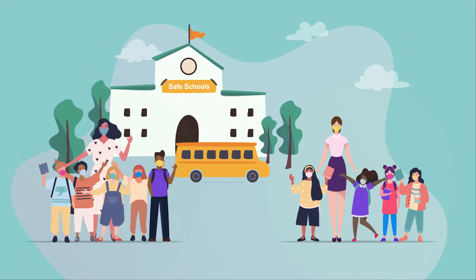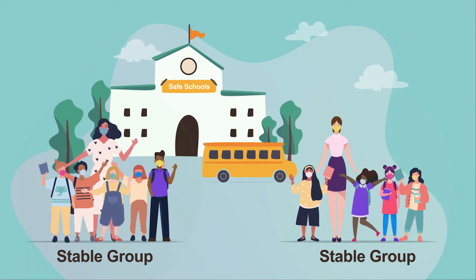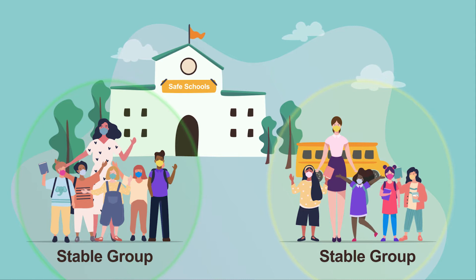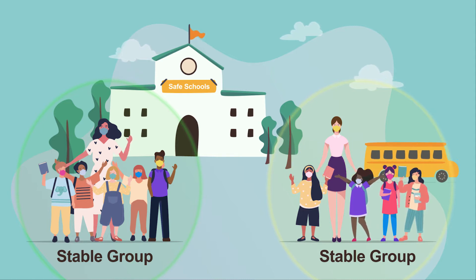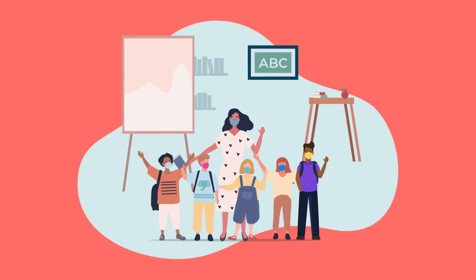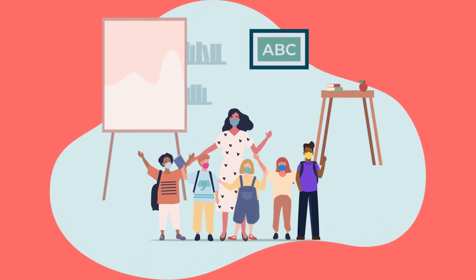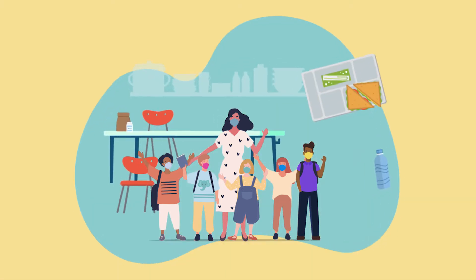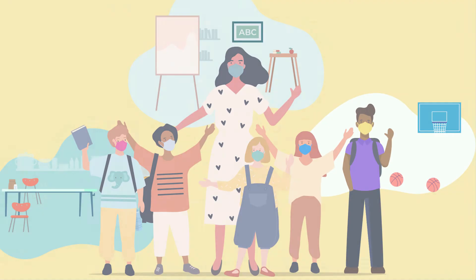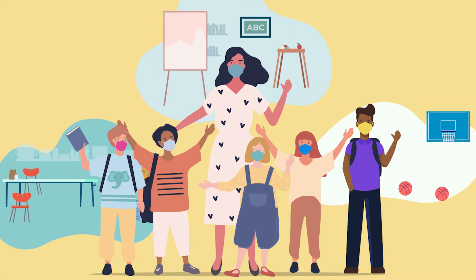What is a stable group in elementary schools? A stable group is a group with fixed membership that stays together without mixing with any other groups for any activities. Members of the stable group stay together for classes, meals, extracurricular activities, and everything else while at school.